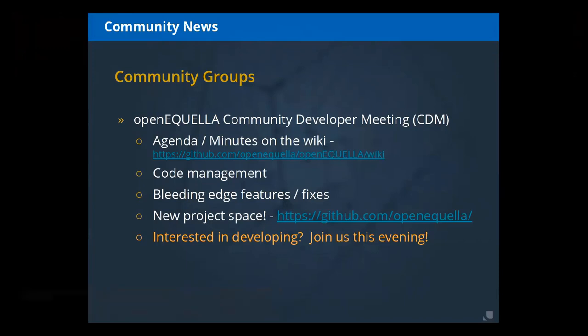We've been focused on talking about code management — how the repositories look, forking model, committership, those kinds of things. We've also been talking about bleeding edge features and fixes as they're coming into the code, what tech debt they might be incurring, and how we can remove some tech debt. We also have a new project space — the Open Equella project on GitHub — still owned by Apereo, but with a new home to better facilitate management of the community.